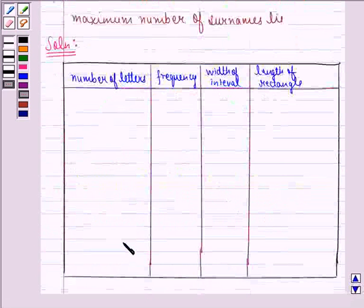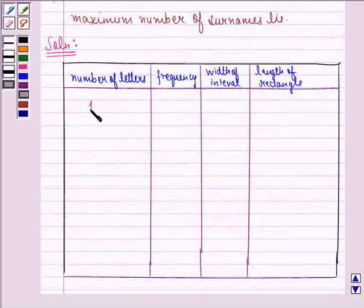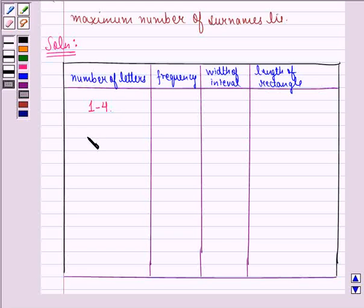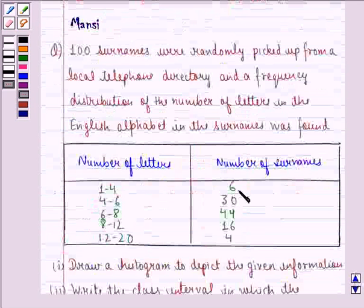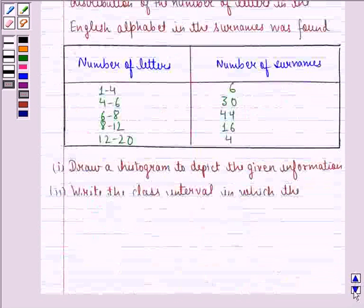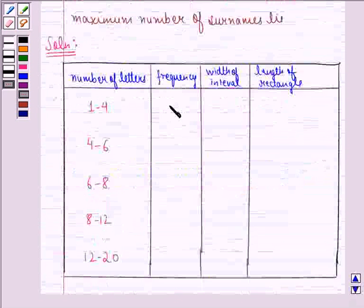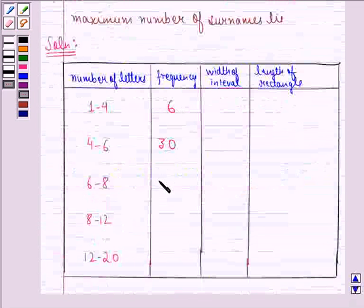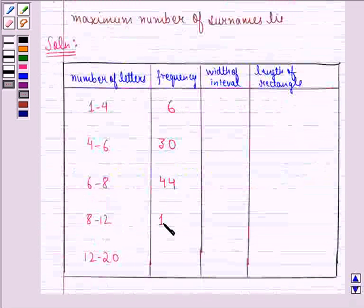One would be the number of letters. They are 1 to 4, 4 to 6, 6 to 8, 8 to 12 and 12 to 20. Now the frequency is 6, 30, 44, 16, 4.